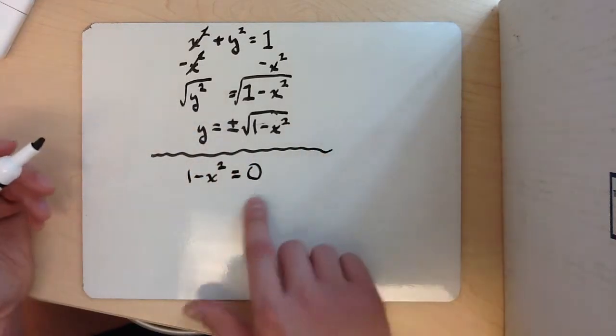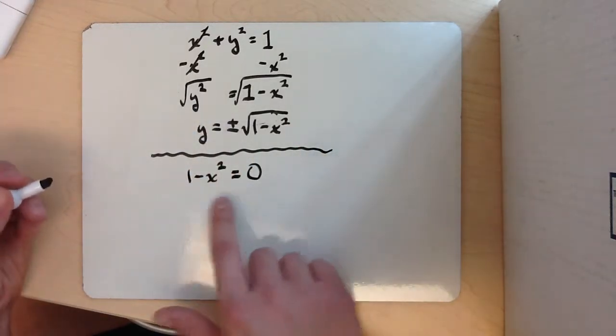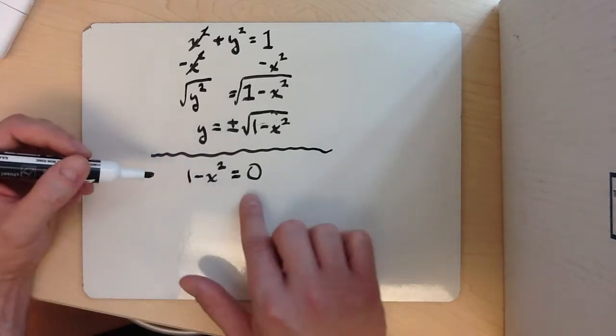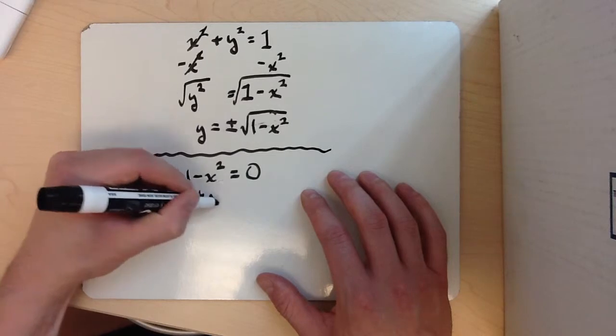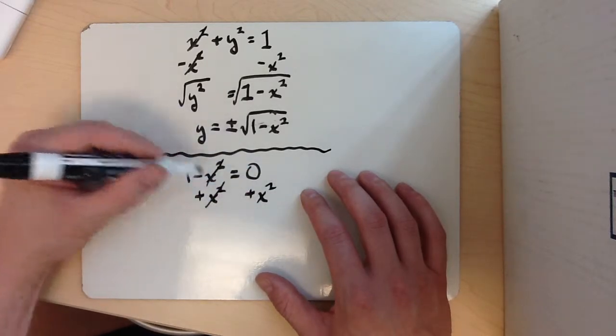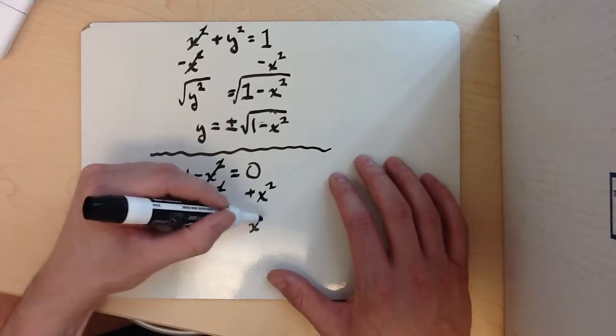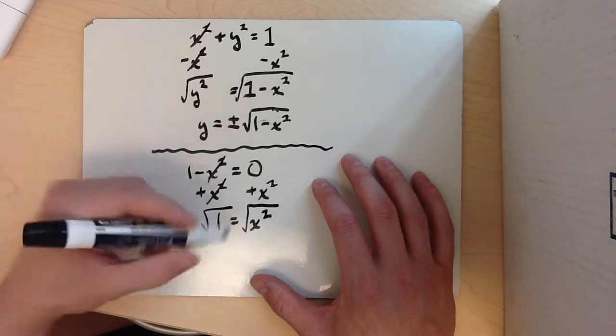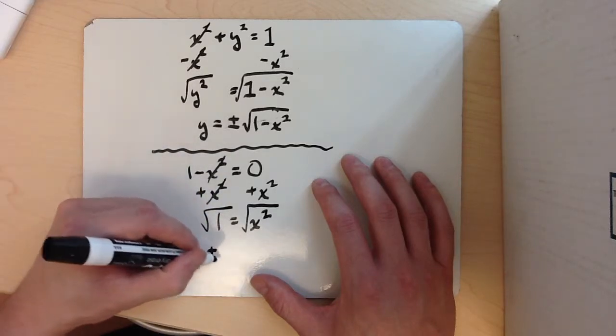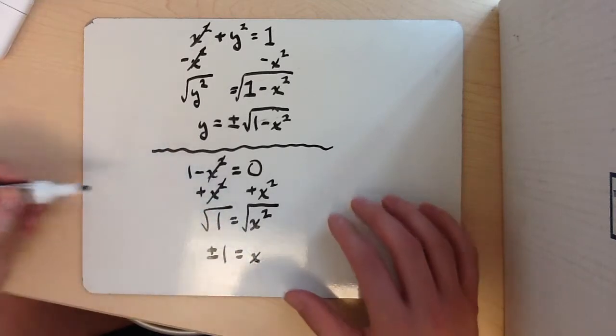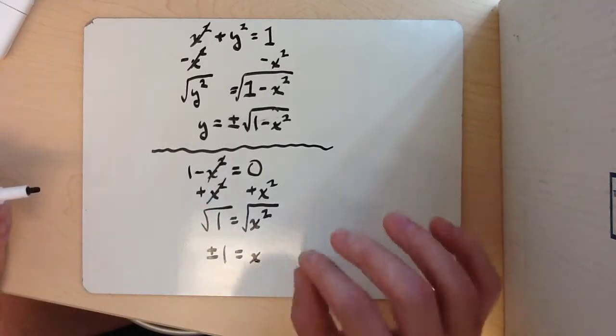This is going to be our boundary for the domain, basically for the x. So what I'm going to do here is first I'm going to add x squared to both sides to get rid of the x squared. So that's going to cancel on the left. 1 is equal to x squared. Take the square root again and you end up - the square root of 1 is, in this case, plus or minus 1 equals x. So these are going to be our boundaries for our domain.